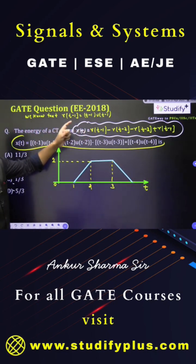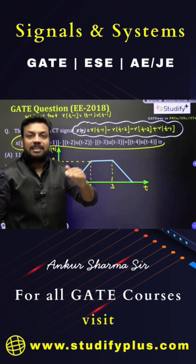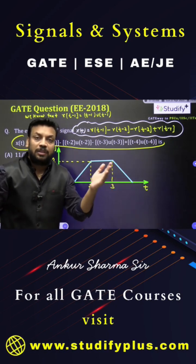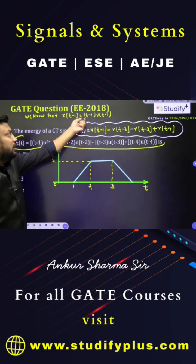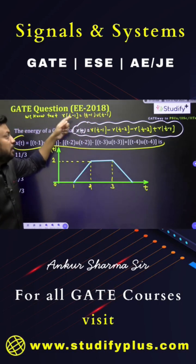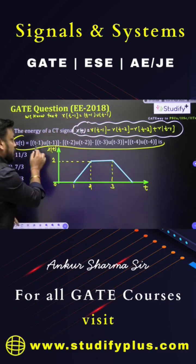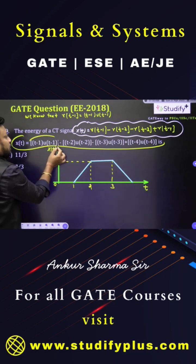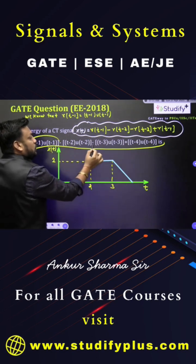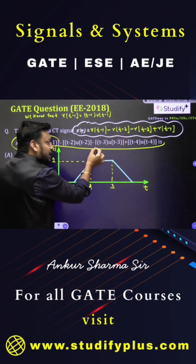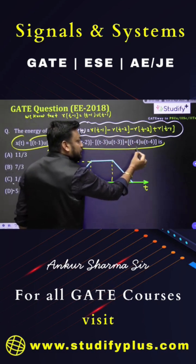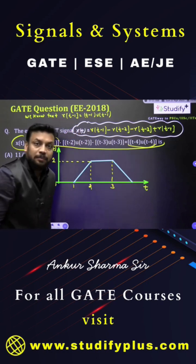We know this fact: the relation between the ramp signal and step signal is R(T) equal to T·U(T). So T-1·U(T-1) is nothing but R(T-1). Similarly, T-2·U(T-2) will be R(T-2), T-3·U(T-3) will be R(T-3), and T-4·U(T-4) will be R(T-4).